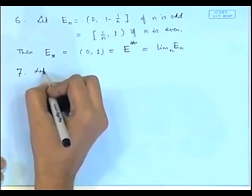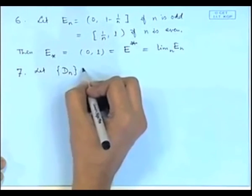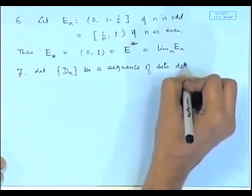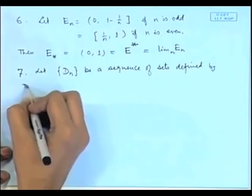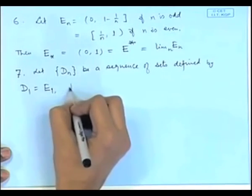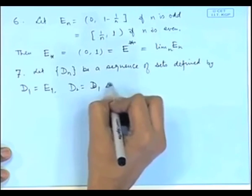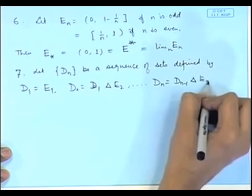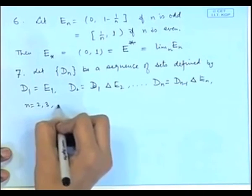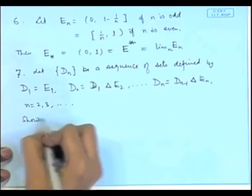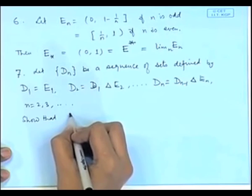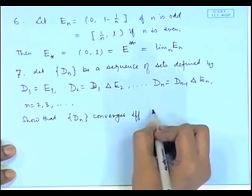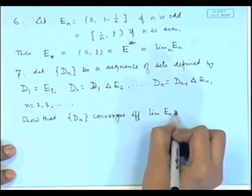Let me complete today's lecture with a final exercise. Consider a sequence defined by d_1 equal to E_1, d_2 equal to d_1 delta E_2, and in general d_n equal to d_{n-1} delta E_n for n equal to 2, 3, and so on. Show that the limit of the sequence d_n exists if and only if the limit of the sequence E_n equals the empty set phi.